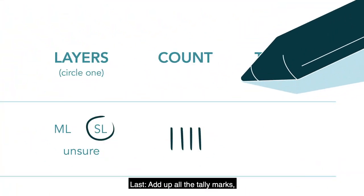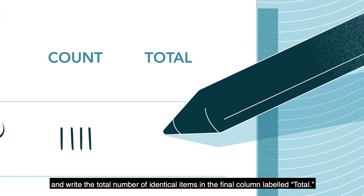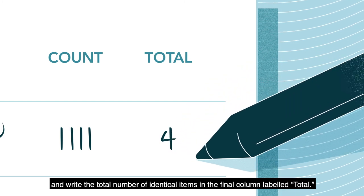Last, add up all the tally marks and write the total number of identical items in the final column labeled Total.